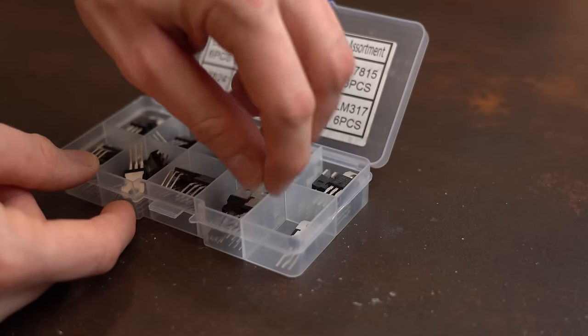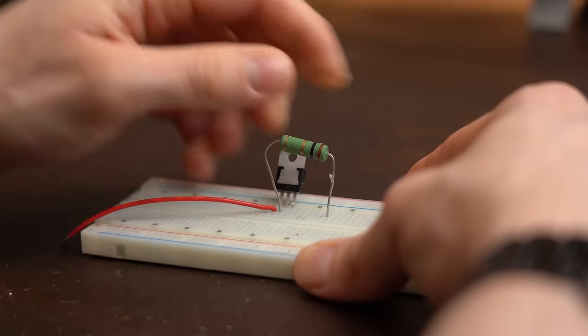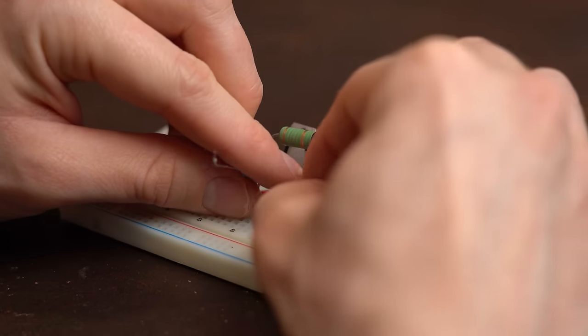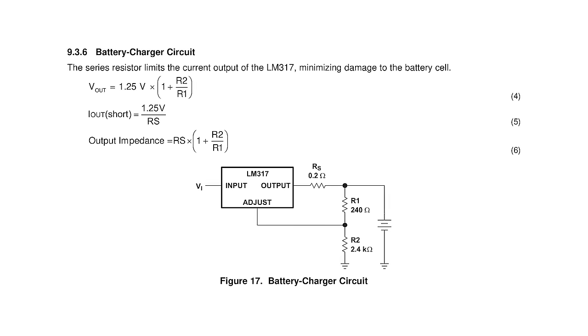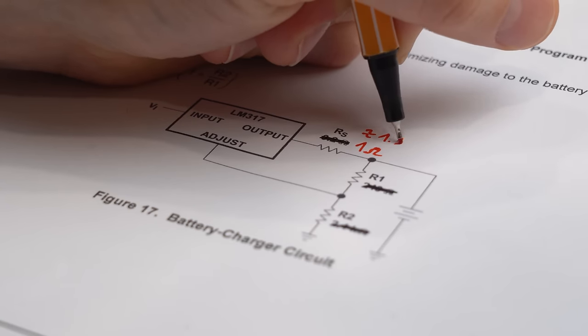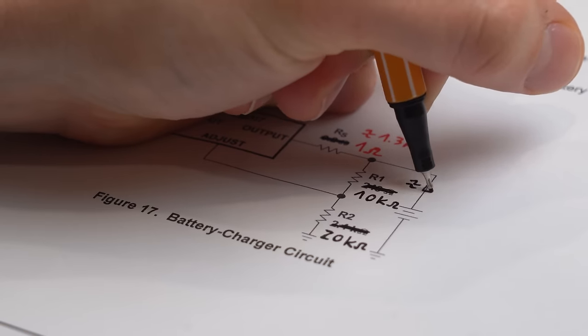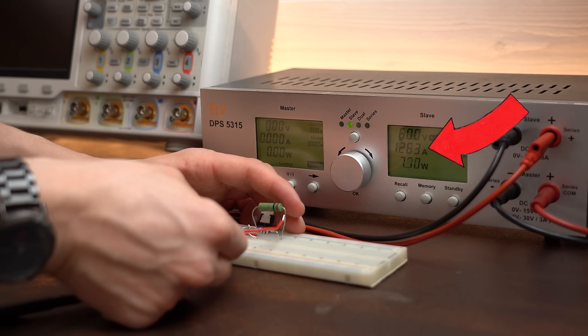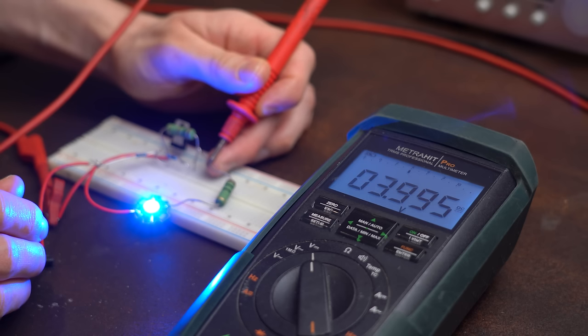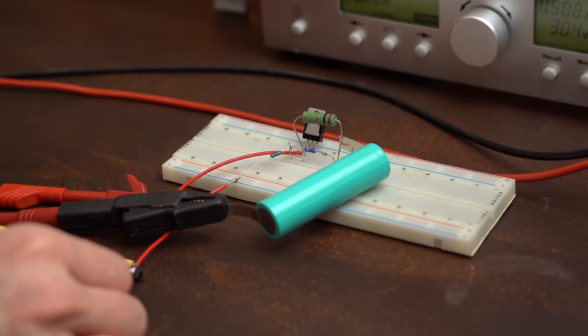But the good news is that with an ordinary LM317 adjustable voltage regulator you can pretty easily build up a crude constant voltage constant current charger according to the schematic given by the datasheet. With this resistor value we should get a maximum of 1.3A and with this resistor voltage divider an output voltage of 4V which according to my tests was all pretty close and thus suitable for my sodium ion battery.